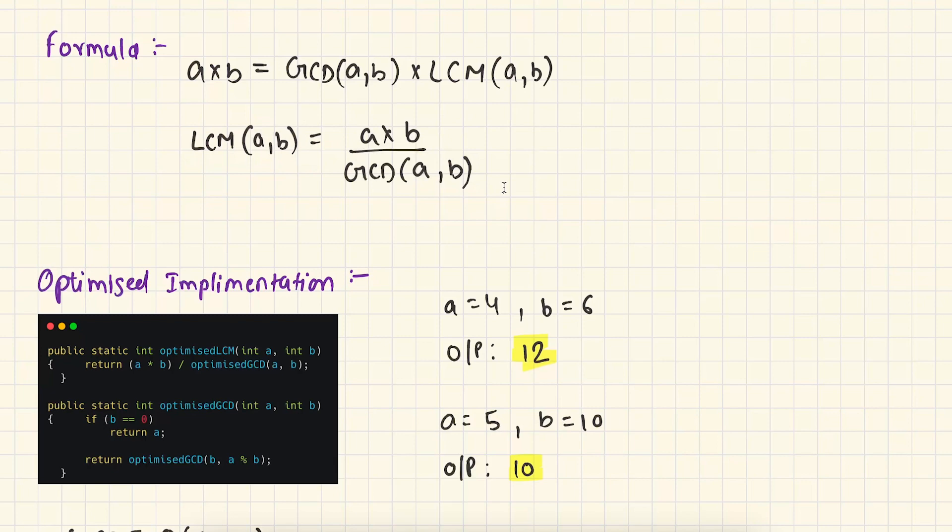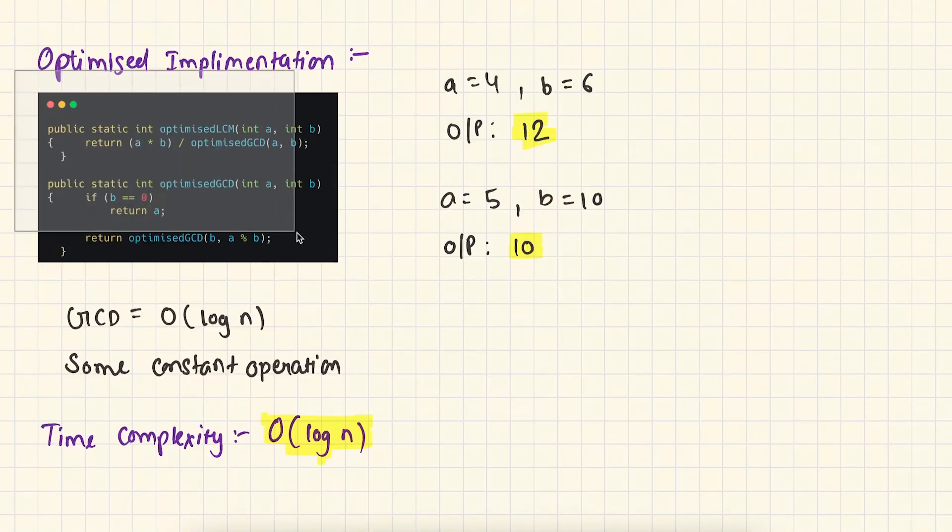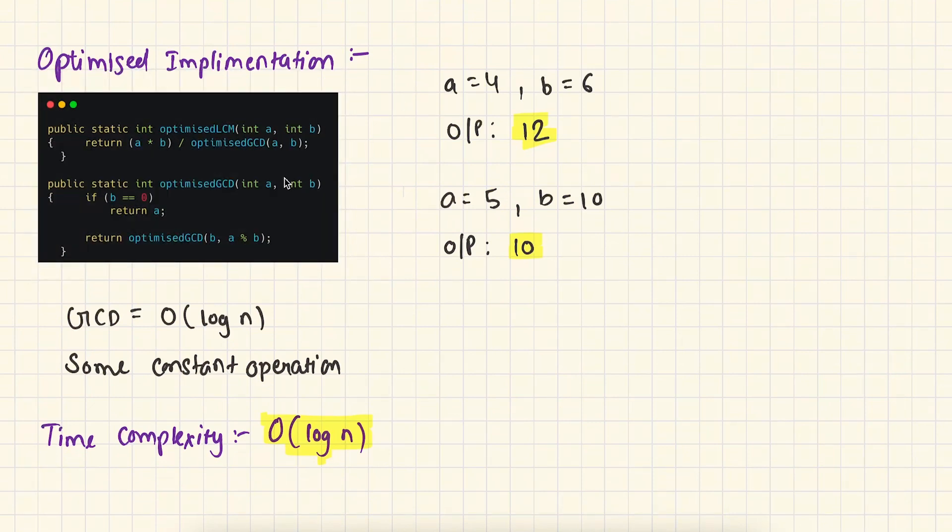Let's implement this formula in code. On the left side, you can see the simplest implementation of this solution. This is one line of code. We are simply multiplying A with B and dividing by GCD of A and B. This piece of code we have already seen in the previous video. If you have not watched that video, I highly recommend to watch that video and come back here and continue watching this video. In case of A equal to 4 and B equal to 6, we get 12 as the LCM. In case of 5 and 10, we get 10 as LCM of 5 and 10.